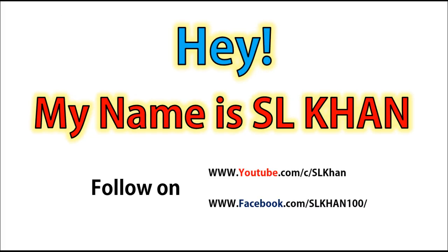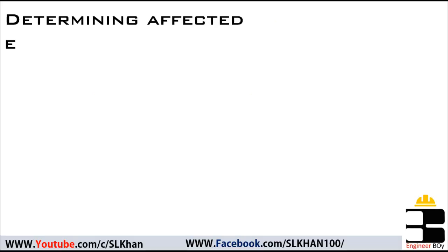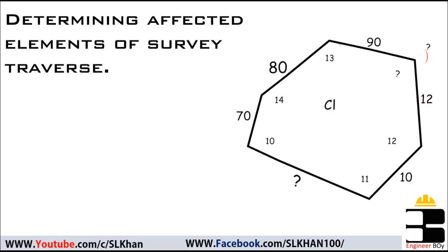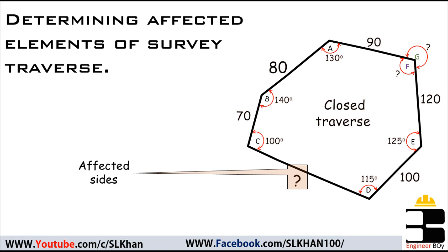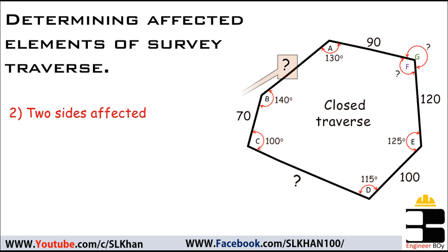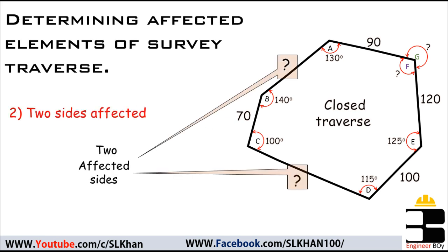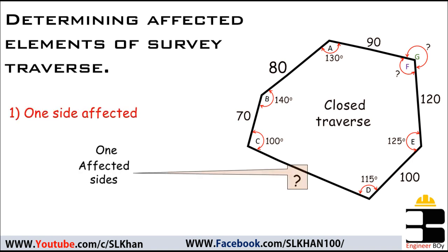I'm Ishil Khan and in this video we will be learning about the missing line measurements of a traverse. Sometimes there may be conditions where the length or bearing of a traverse could not be measured, which is then known as the affected side or missing side. This can have two cases: one line affected and two lines affected. In this short video I'll cover only a traverse problem affected by one side. Let's take a look at the given example.